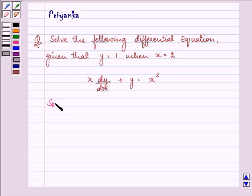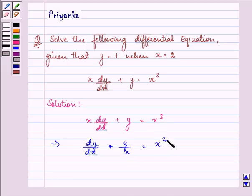Let us proceed by solving this differential equation. First of all, let us divide both sides by x. On doing so we have dy by dx plus y upon x equal to x cube upon x, that is equal to x square. Now this is a linear differential equation.